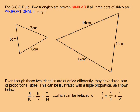This can be illustrated with a triple proportion. I put the shortest side from one triangle over the shortest side from the other, put the medium length side from one over the medium length side from the other, and put the longest side from one over the longest side from the other.